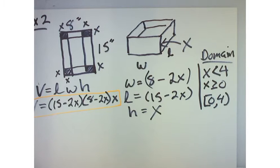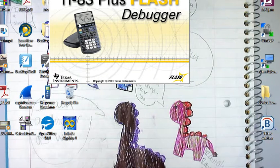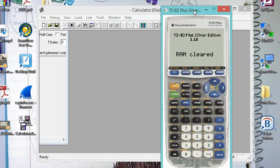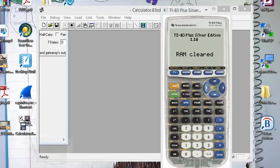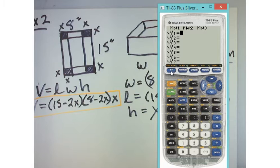So, part c says, graph the function of the domain and take a look at it. So, if I come in here and I graph this function, and you know, we could multiply it out, but we don't really need to. I could just enter it in just the way I have written it. So, the equation is 15 minus 2x. So, I could just plug it in the way I've written it. And I could say 15 minus 2x times 8 minus 2x times x.